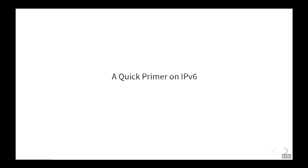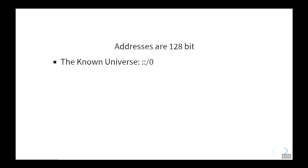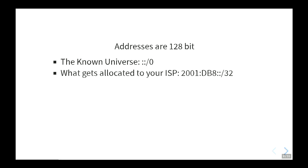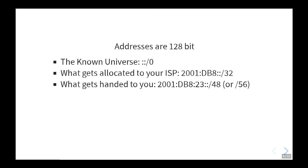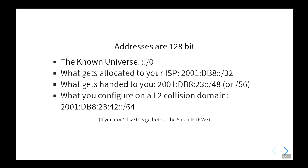A quick primer on IPv6, only the part we need for SlackD. Addresses are 128 bits. Your ISP gets a /32 allocated. Your ISP is supposed to hand you a /48 or a /56. And you're supposed to assign a /64 on a layer-2 collision domain.